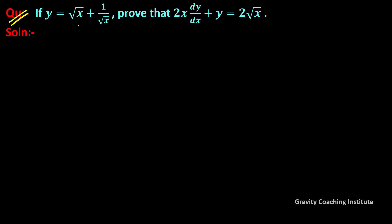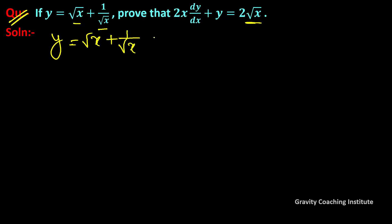Question: if y equals root x plus 1 upon root x, prove that 2x into dy upon dx plus y equals 2 root x. So here, given y equal to root x plus 1 upon root x.